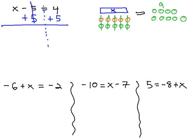Notice, negative 5 and positive 5 subtract out to 0, leaving just the x on the left side. 4 plus 5 is 9, and so now we know this x is representing the number 9.